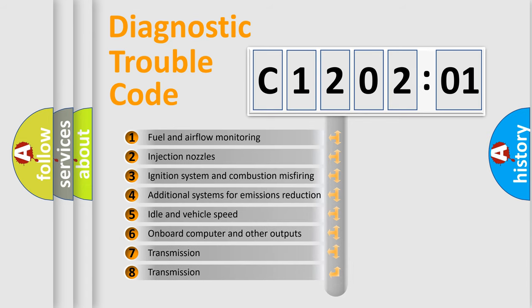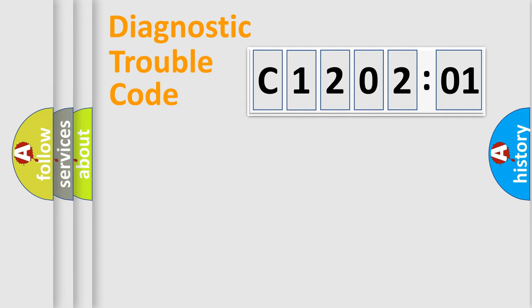The third character specifies a subset of errors. The distribution shown is valid only for the standardized DTC code. Only the last two characters define the specific fault of the group.